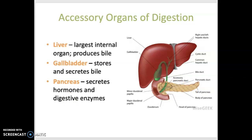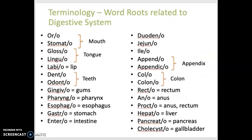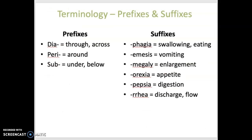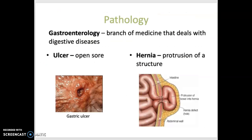Next in the PowerPoint and in your outline are some combining forms related to the digestive system, as well as prefixes and suffixes, followed by some pathology related to this body system. An ulcer is an open sore on the skin or on mucous membranes of the body, and it's named based on the location. Peptic ulcers develop in the digestive tract.